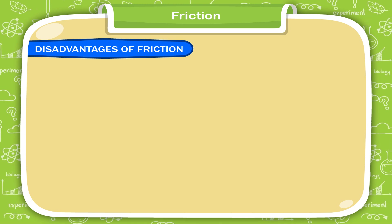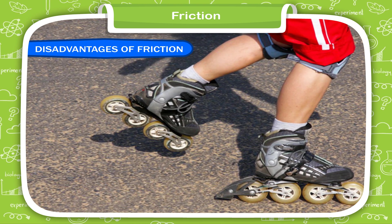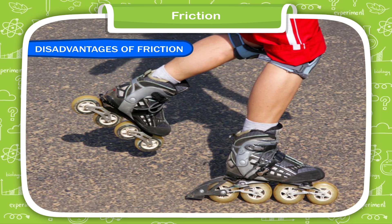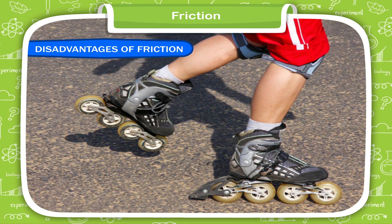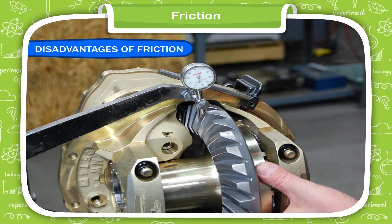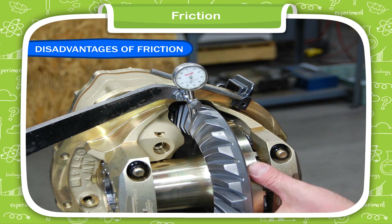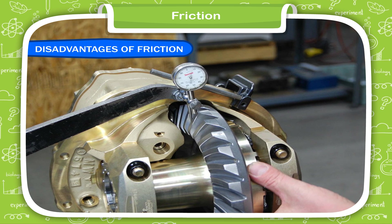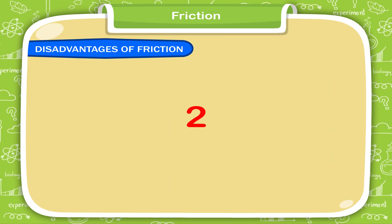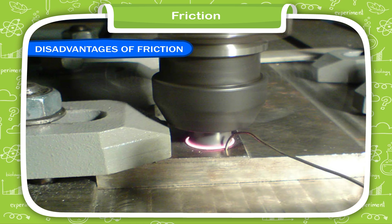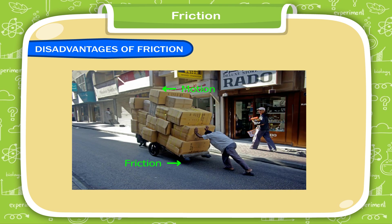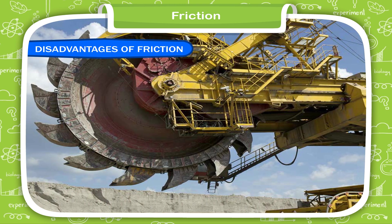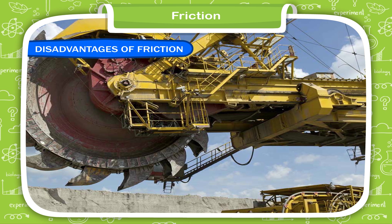Disadvantages of Friction. Although friction is of great importance in our life, yet in many cases it acts as an evil. Some of the disadvantages of friction are: 1. Friction reduces the efficiency of a machine as it causes wear and tear in machinery parts in contact and that are moving. 2. The generation of heat due to friction can damage the surface in contact. 3. Friction causes wastage of energy. The frictional force between the various parts in a machine produces a lot of heat and noise at the cost of mechanical energy.